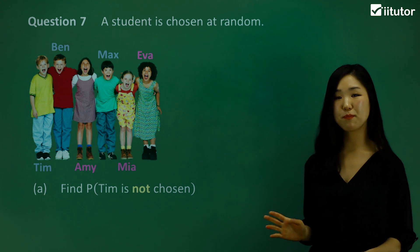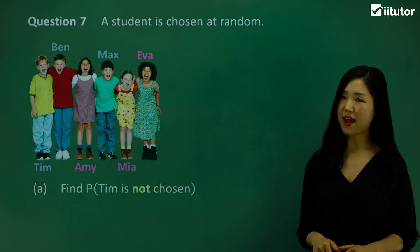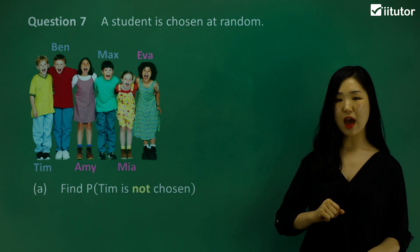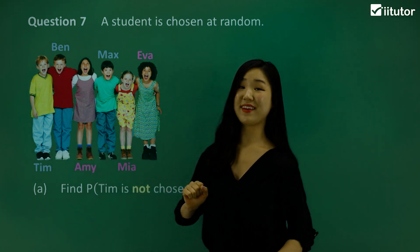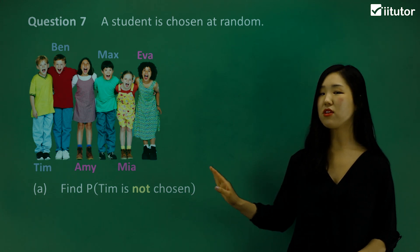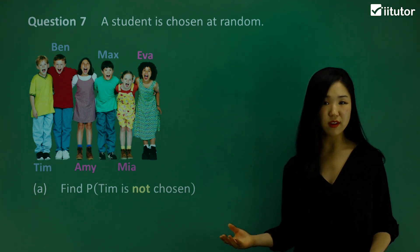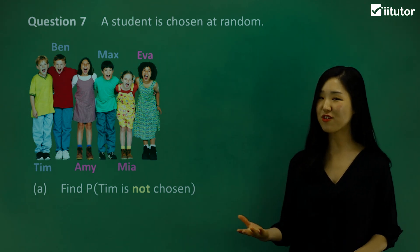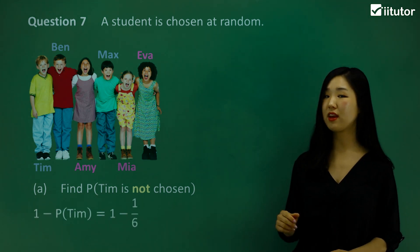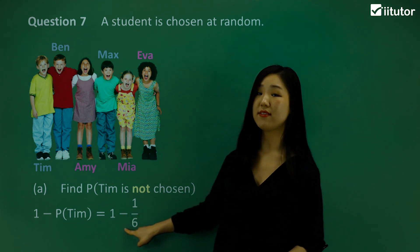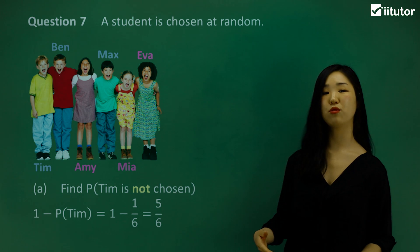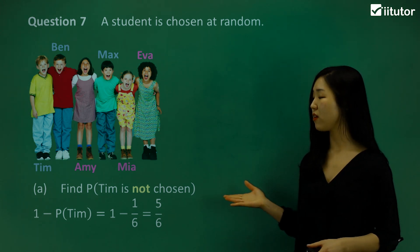Question 7: we've got some children here and a student is chosen at random. Part A: find the probability that Tim is not chosen. You can see that the one on the left is Tim. Tim not chosen is the complementary event of Tim being chosen. So we'll use our complementary event rule: 1 minus the probability of Tim, which is 1 out of the total of 6 children. So 1 minus 1/6 is simply 5/6. That's the probability of Tim not being chosen.